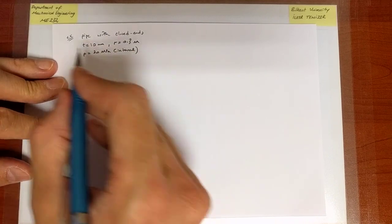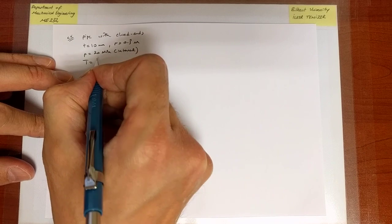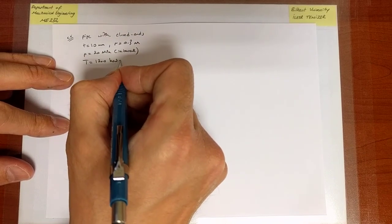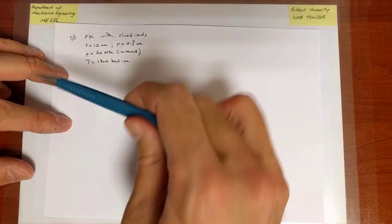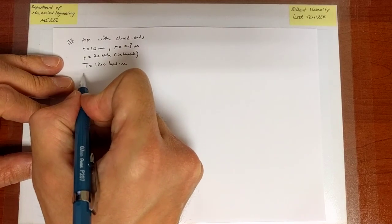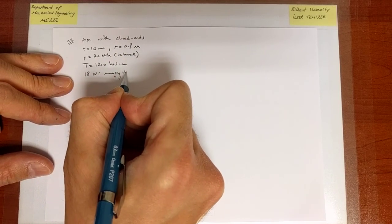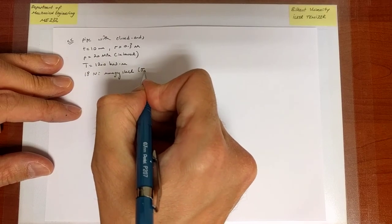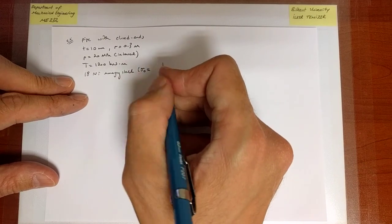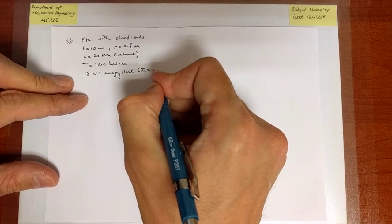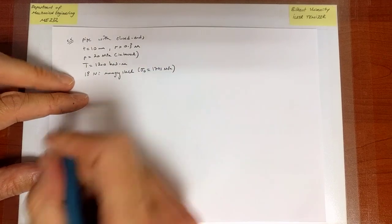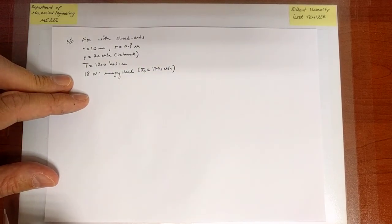Additionally, there is a torque — understood to be about the axis of the pipe — of 1200 kilonewton-meters. The material is 18 Ni maraging steel. Looking it up in the material tables, it is a ductile material with a yield strength of 1791 MPa. The question is: what is the safety factor against yielding?